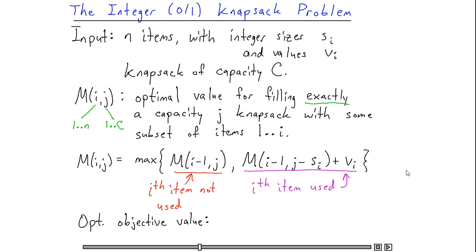After computing all of the m i j's, the optimal objective value is obtained by maximizing over all j's the value of m of n comma j. Because I don't know in the optimal solution what amount of the capacity is going to be used up.